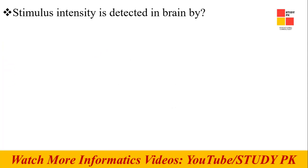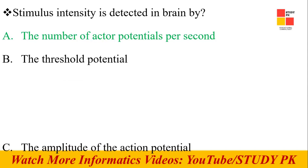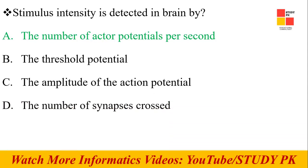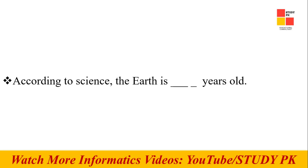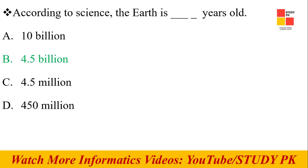Next question: Stimulus intensity is detected in the brain by the number of action potentials per second. Yes, the right option is the number of action potentials per second. Next question: According to science, how old is the Earth? 4.5 billion years is the right option.